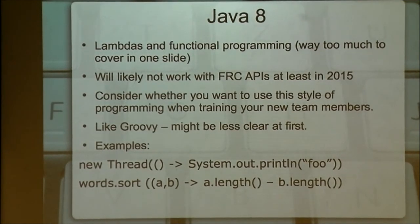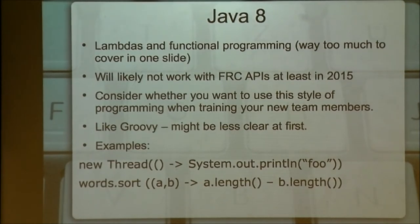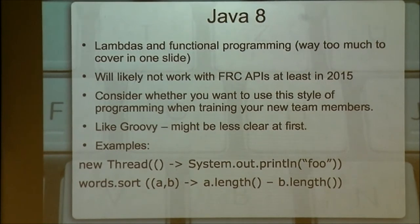Java 8 introduces a whole new world of programming, and for the most part we're not going to be able to use it next year. In order to use the Java 8 way of programming you need a library that works with Java 8. FIRST has already gone on the record of saying for a couple of years they're going to try to keep backwards compatibility with the existing libraries, so they're not planning a complete overhaul of the command-based structure or the simple robot structure. You could still use it in your own code if you choose — it's a trade-off each team needs to make for themselves.